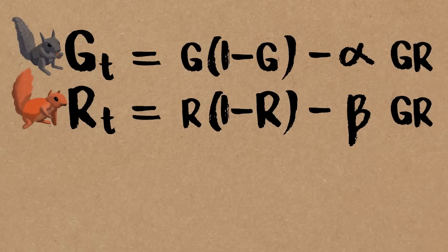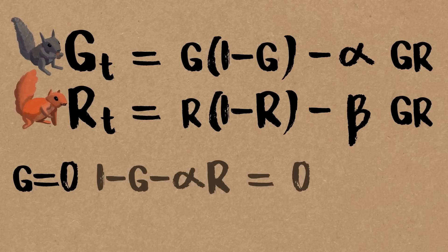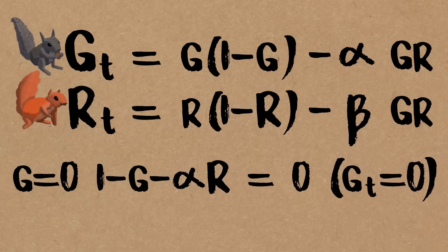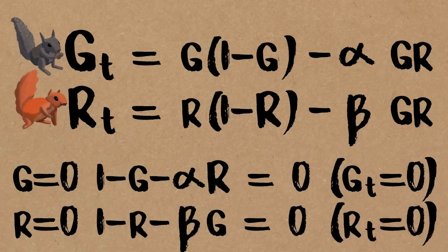The nullclines in this are where the populations aren't changing. So when we set these to zero, that's when the nullclines is. So we set this left-hand side to zero. We have some conditions linking the red and grey, which will give us some curves. And they are the nullclines. So in this first case here, we have G equals zero. When G is equal to zero, that will be satisfied. Or we could have 1 minus G minus alpha R equals zero when Gt equals zero. That's the grey squirrel nullcline. This one, if R is zero, that's also satisfied. But we could have 1 minus R minus beta G equals zero. And that's the red squirrel nullcline.